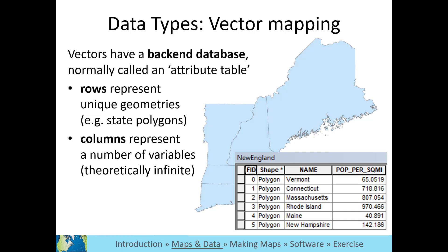All vector data also include a column of unique ID numbers for each feature, and the type of vector shape, which includes internal coordinate information the GIS software uses to display the data.